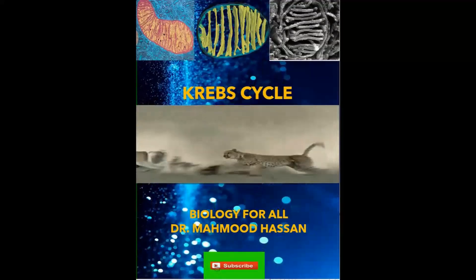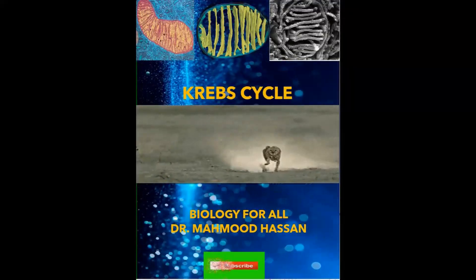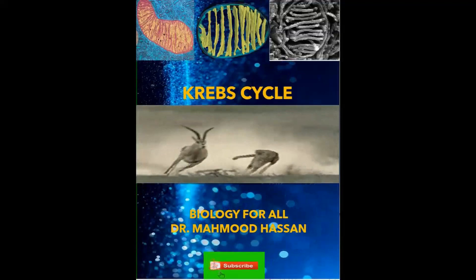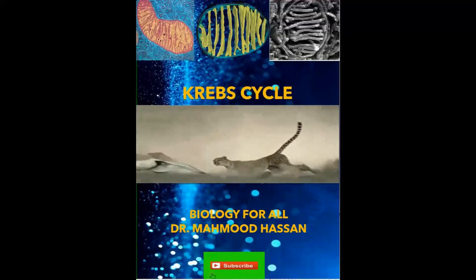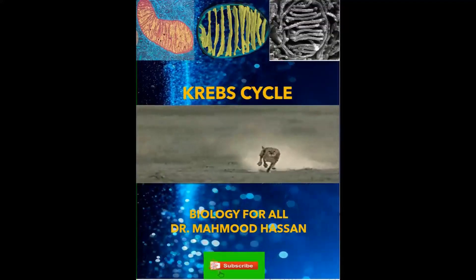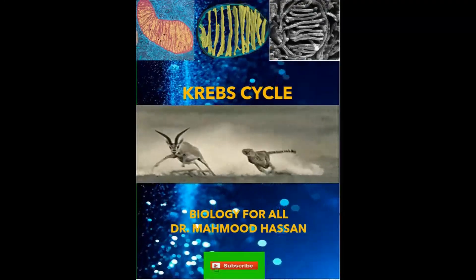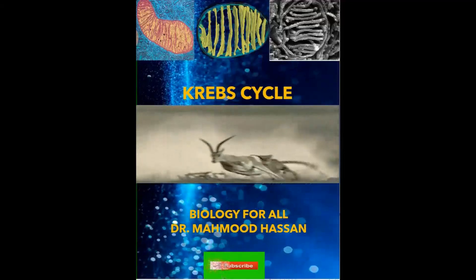The outer membrane is freely permeable to molecules such as ATP and NAD and coenzyme A which have a key role to play in energy metabolism within mitochondria. In contrast, the inner mitochondrial membrane is highly impermeable and virtually all molecules and ions require special membrane transporters to gain entrance into the matrix.